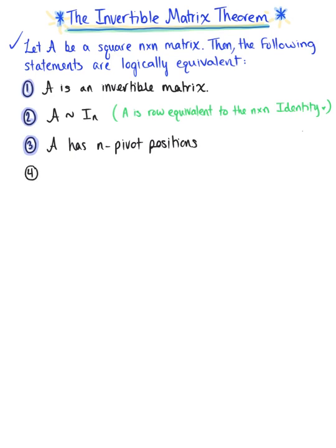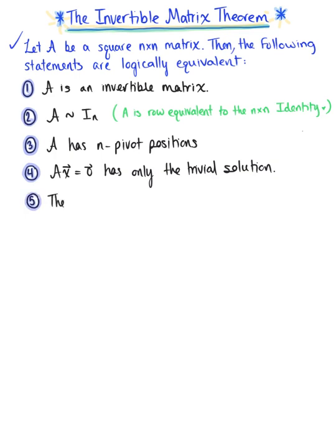These statements are logically equivalent to saying that the homogeneous equation has only the trivial solution — that is, matrix A times vector x equals the zero vector has only the trivial solution. These statements are also logically equivalent to saying that the columns of matrix A form a linearly independent set.